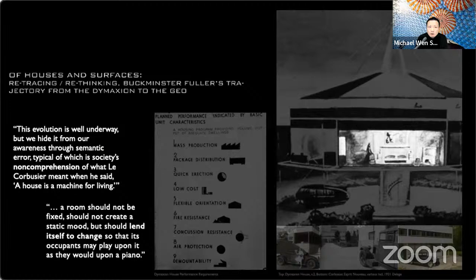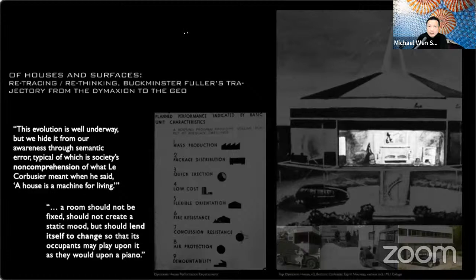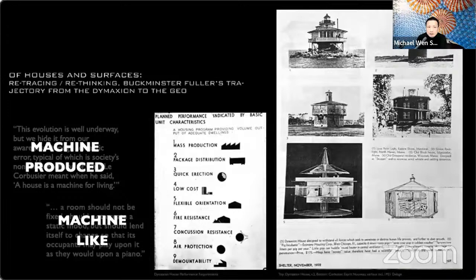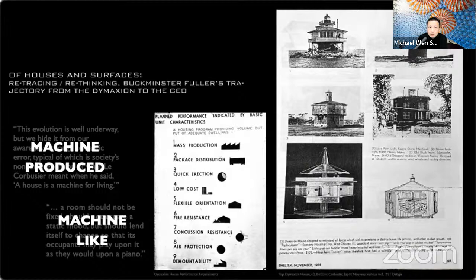Because the house is a machine, its rooms should not be fixed or create a static mood, but should 'lend itself to change so that its occupants may play upon it as they would upon a piano.' This is the connection to your new program: side by side, two parts of machine-architecture — the machine produces the house, and the house is very much like a machine. Fuller took the form directly from lighthouses — examples of construction, form, and structure both heavy and light — extrapolating into what a house should be if modeled after a machine.